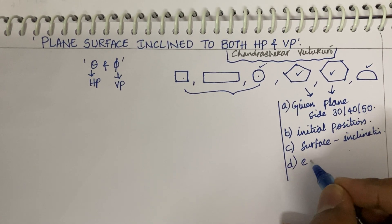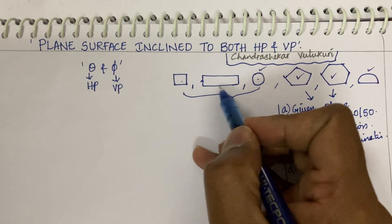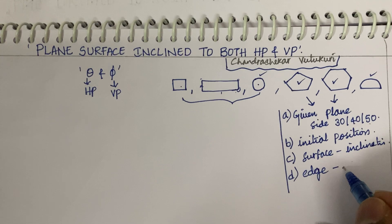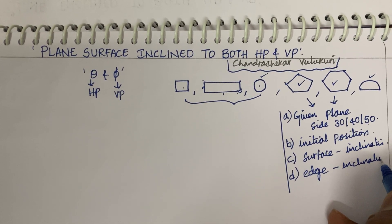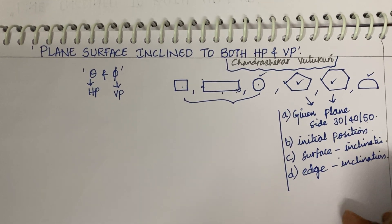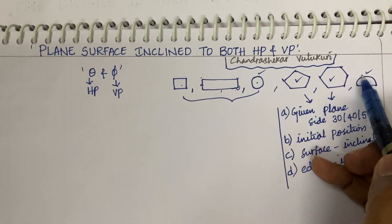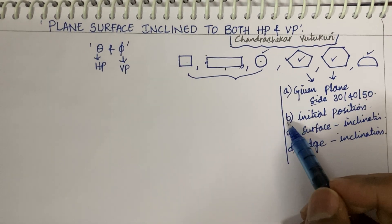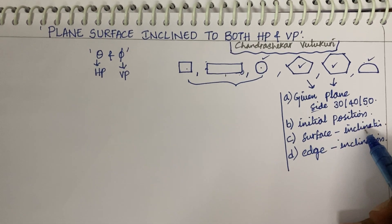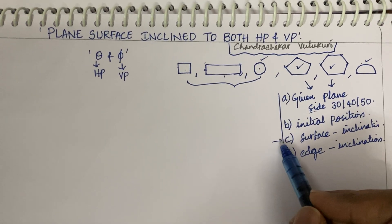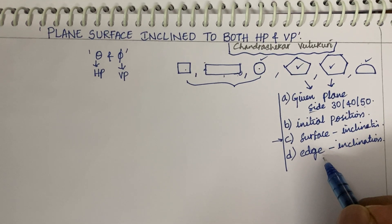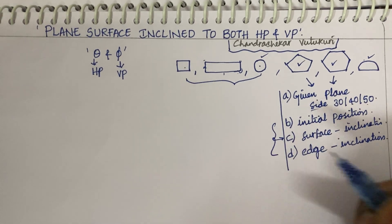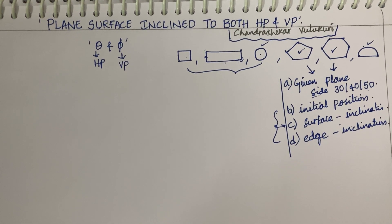The final step is about the edge. If you look at planes, they have only sides, edges, or corners. So whether the edge or corner is inclined, and which plane it is inclined to — that is important. To summarize: first, identify what type of plane is given and its side length. Second, identify the initial position — whether the surface is inclined or not. Third, determine the edge inclination and which plane the edge is inclined to. These are the things to keep in mind before working out a plane problem.